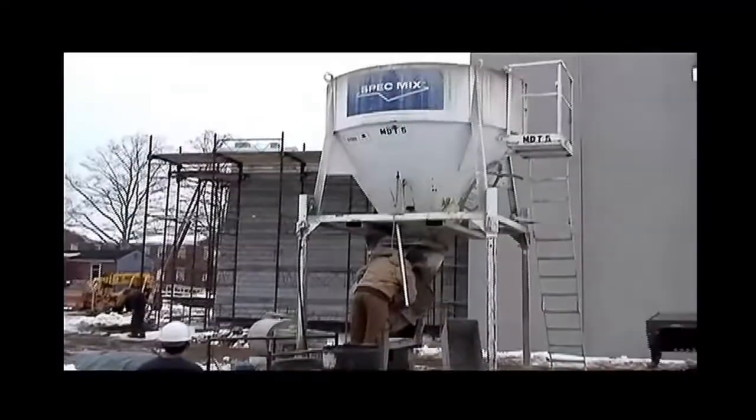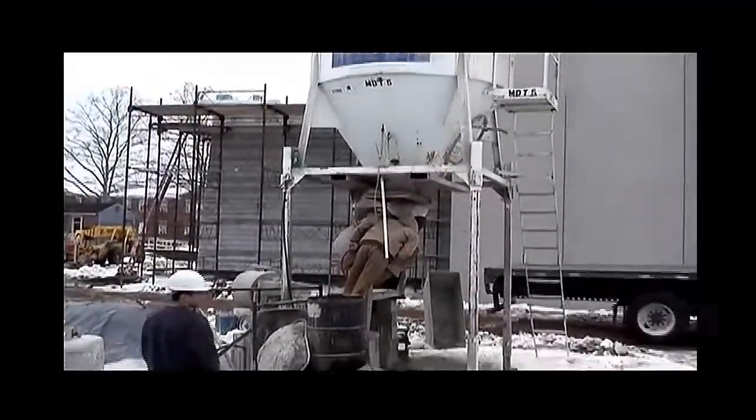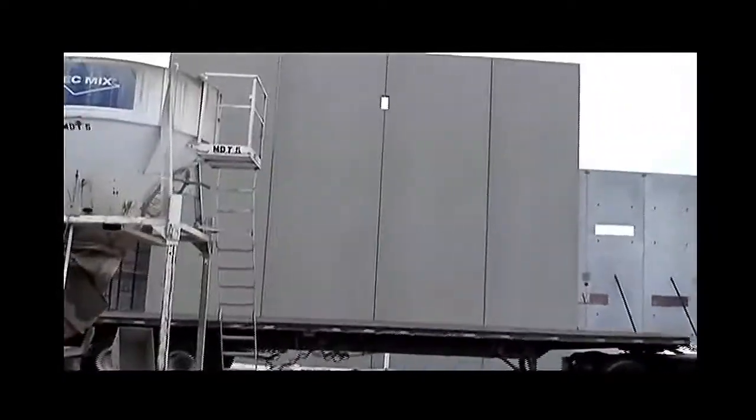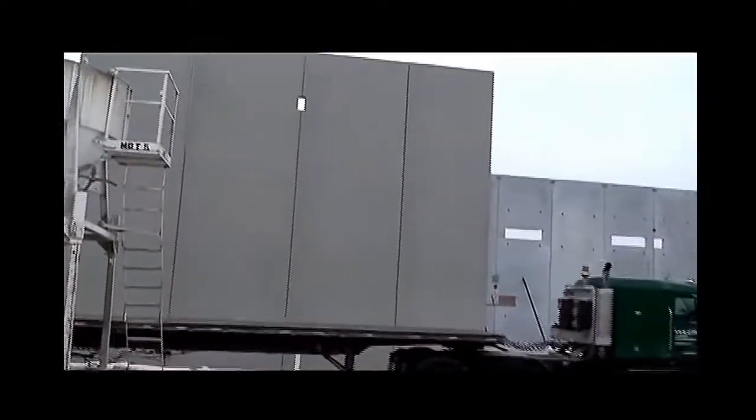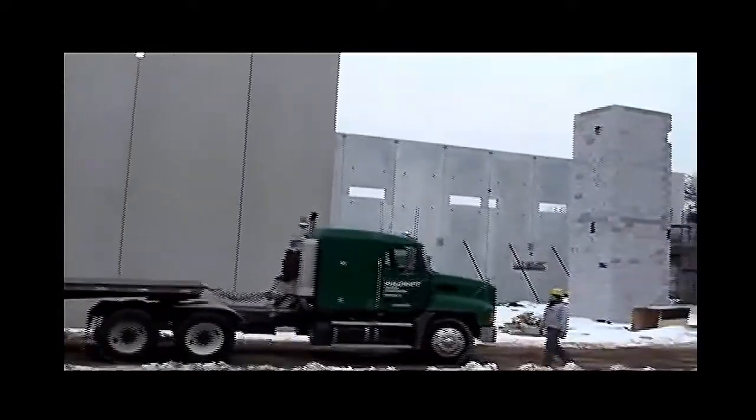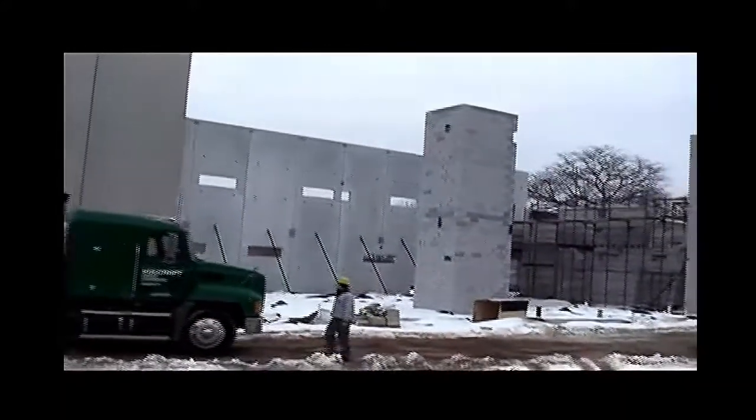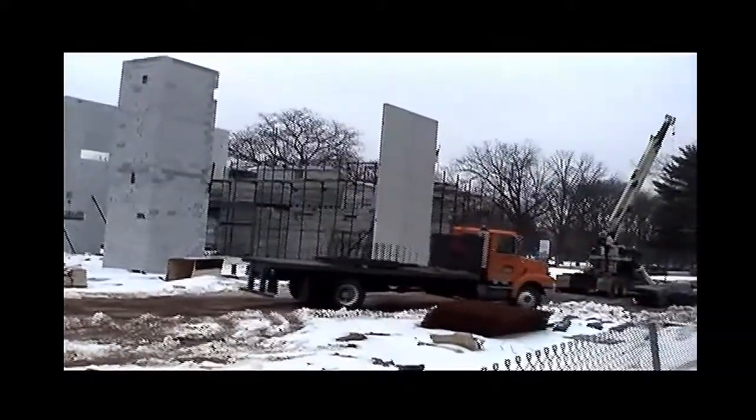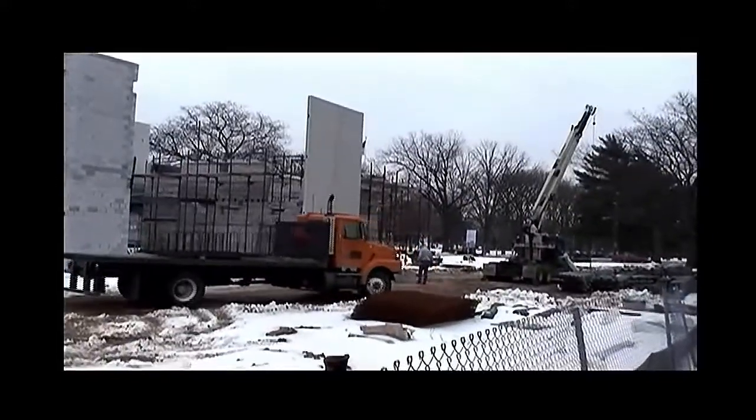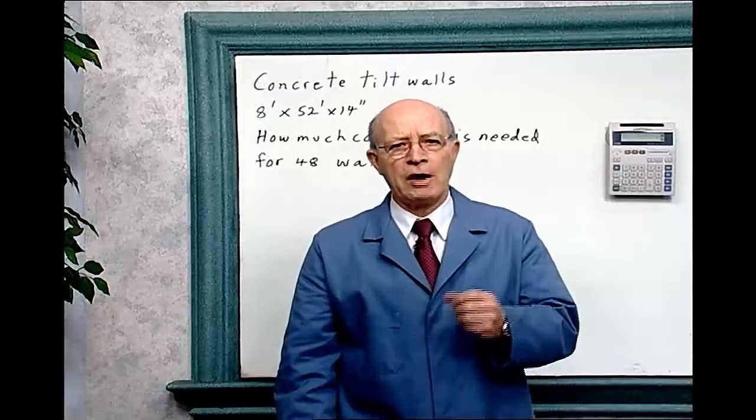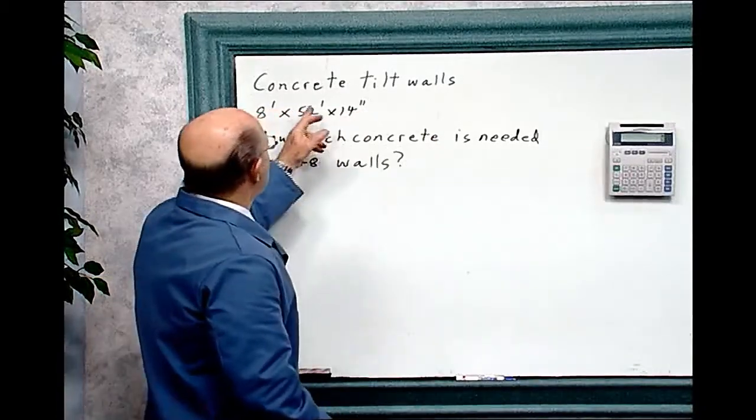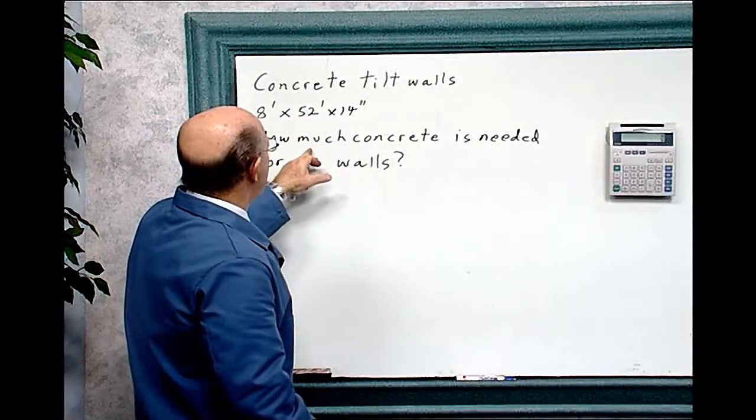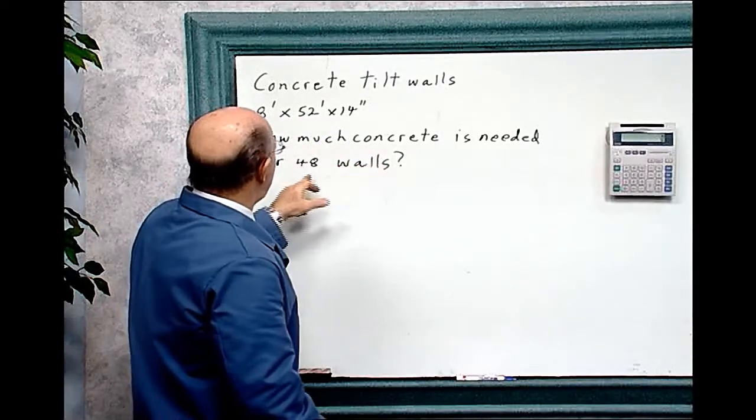The walls in the background are prefabricated concrete tilt walls for a college building. They built the walls off-site, and then they hauled the walls and put them up. If the walls are 8 feet wide, 52 feet tall, and 14 inches thick, how many cubic yards of concrete is needed for 48 walls? Let's figure out this problem. The concrete tilt walls are 8 feet by 52 feet by 14 inches. How much concrete is needed for 48 walls?